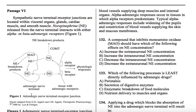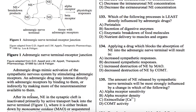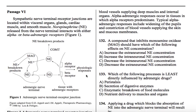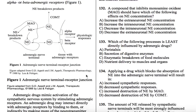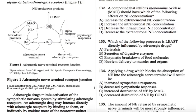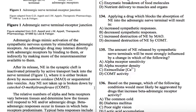Alpha-adrenergic responses occur in tissues in which alpha receptors predominate. Typical alpha-adrenergic responses include widening of the pupils and constriction of the blood vessels supplying the skin and mucous membranes. So basically, the sympathetic responses are split between these alpha-expressing tissues and these beta-expressing tissues.